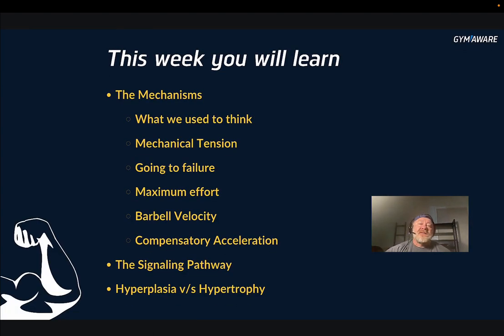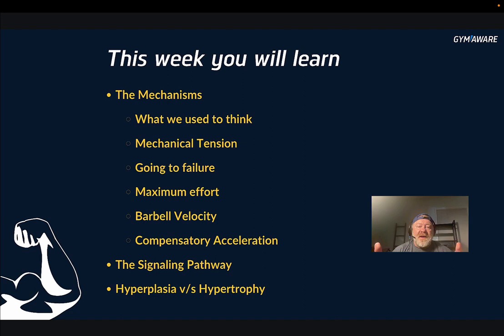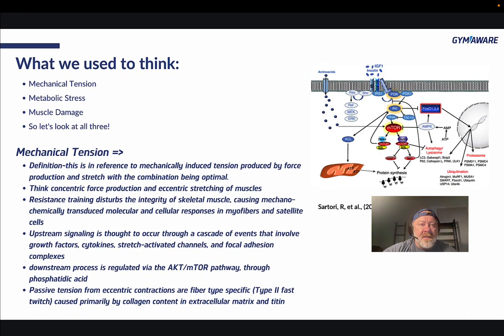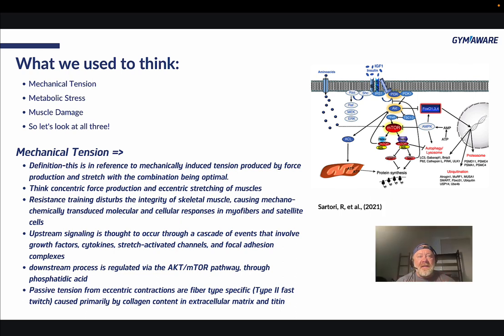This week we're going to learn about the mechanisms — what we used to think: mechanical tension, going to failure, maximum effort, barbell velocity, compensatory acceleration — what causes muscle hypertrophy. I literally wrote a book, around 2016, called Mass Jacked. In that book I talked about mechanical tension, metabolic stress, and muscle damage as the three main triggers of muscle hypertrophy.